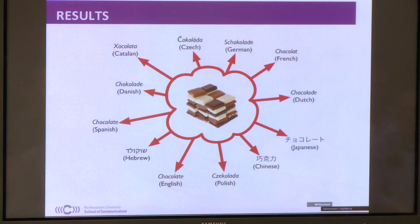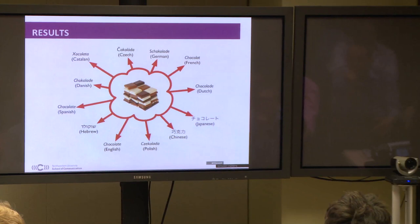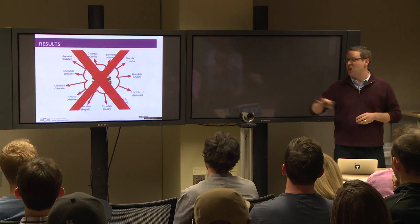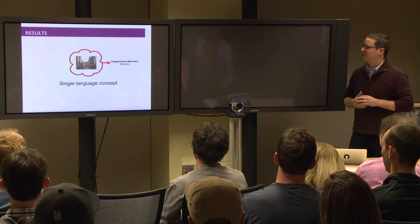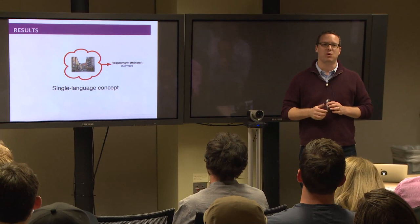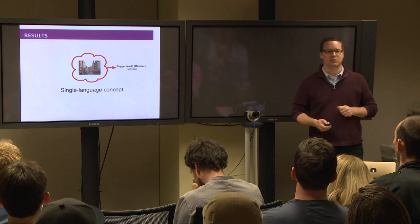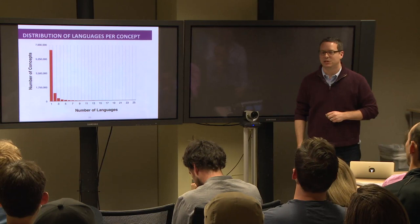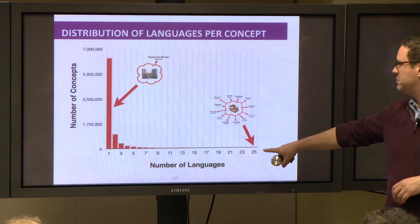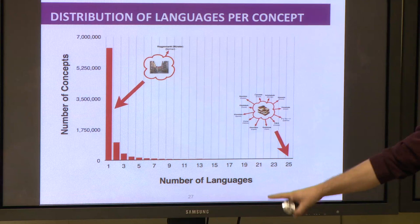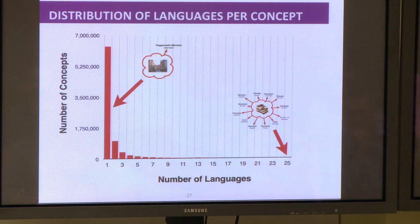After parsing all 25 database dumps and aligning over 11 million articles to their corresponding concepts, what did we find? The typical concept looks nothing like chocolate — a hyperlingual global concept. In fact it was much more the case that it looked like 'Roggenmarkt,' a market in Münster, Germany — a single-language concept. We find that the vast, vast proportion of concepts across all these different language editions are single-language concepts. Less than one-tenth of one percent of concepts exist in all 25 top language editions of Wikipedia.